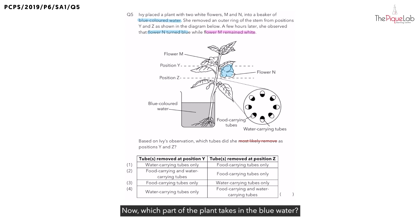Now, which part of the plant takes in the blue water? It's the roots. Thus, we know that the water was transported up the water carrying tubes all the way to flower N. Hence, at position Z, was the water carrying tube intact? Yes, it was.